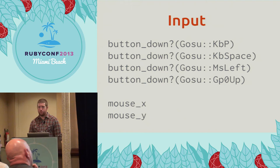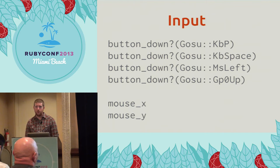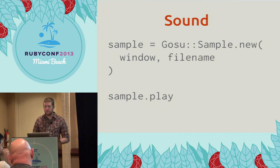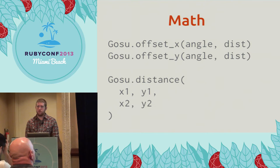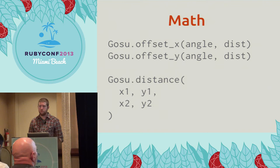Gosu also makes getting input from your player pretty easy. The button_down method will return true if a given button is being held down, whether it's a button on the keyboard, a mouse, or a gamepad or joystick. And if you have mouse interaction in your game, you can both set and read the positions of the mouse through mouseX and mouseY. Sounds are pretty similar to images — you can construct a sample with a window and a filename of a sound file, and then every time you call play, the sound will come out of your speakers. Gosu also includes some math helpers for 2D geometry: offsetX and offsetY tell you how much travel in a given direction maps to the x-axis versus the y-axis, and Gosu distance gives you the distance between two points.